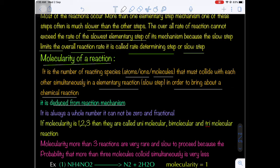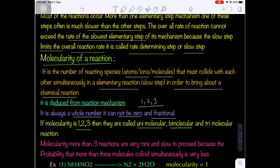Molecularity cannot be zero and cannot be fractional (e.g., 0.5, 1.5, 2.2). If molecularity is 1, the reaction is called unimolecular. If molecularity is 2, it is bimolecular. If molecularity is 3, it is trimolecular. We know in organic chemistry: SN2 is bimolecular nucleophilic substitution, SN1 is unimolecular nucleophilic substitution, E2 is bimolecular elimination, and E1 is unimolecular elimination.